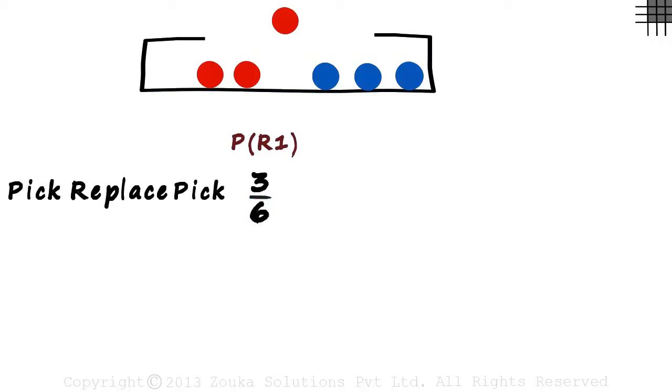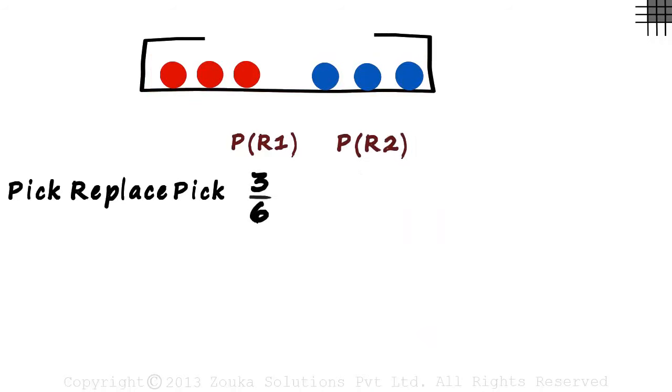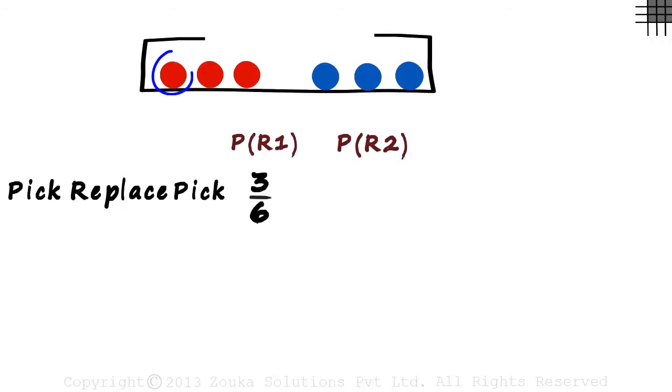So you picked one red marble up and placed it back in. Now what is the probability of picking a red marble in your second chance? We call it P of R2. Since we place the ball back in, there are three red marbles and six total marbles. So the probability still remains three by six. It's unchanged.